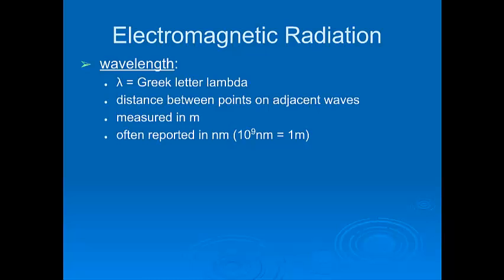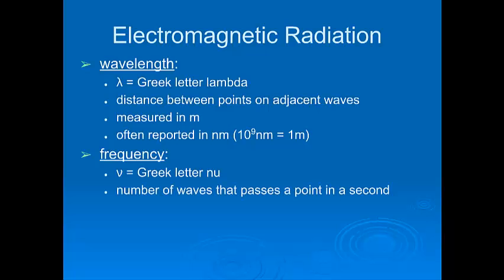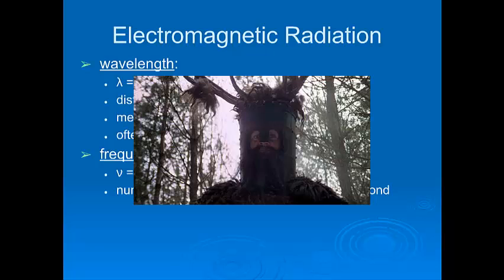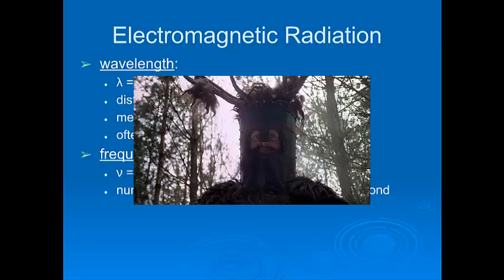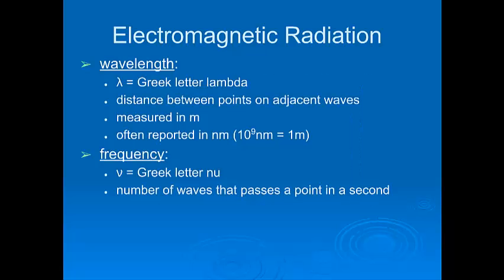The third property, so we have amplitude, wavelength, and finally frequency. And frequency is defined as the number of waves that pass a point in one second. It's represented by the Greek letter nu. Now, I know that looks like it says new, but I have it on good authority from several native Greek speakers that that is actually pronounced nu. That's the name of the letter. It's the Greek letter N. And it's the number of waves that pass a point in a second.